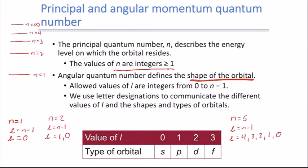So for N=1, we only have one angular quantum number — L=0 — giving us only an s orbital. But at the N=2 level, we get both an s orbital and a p orbital, so we have two different types of orbitals — two different shapes.